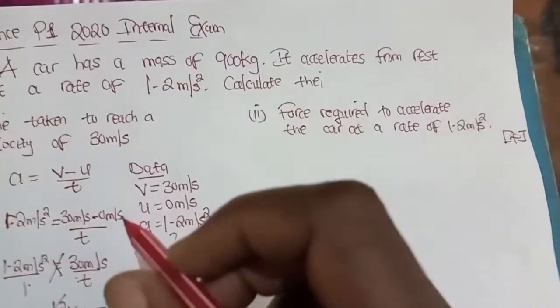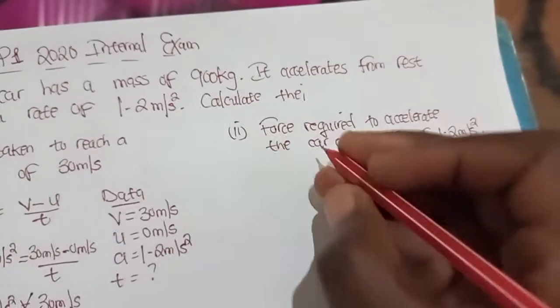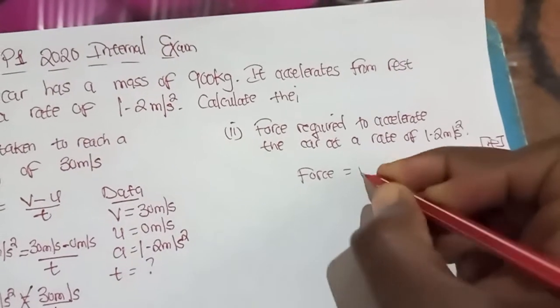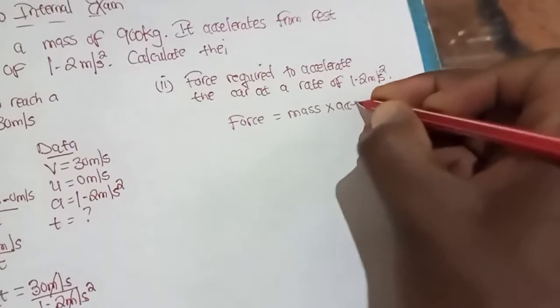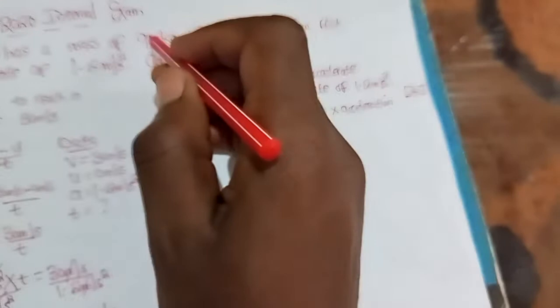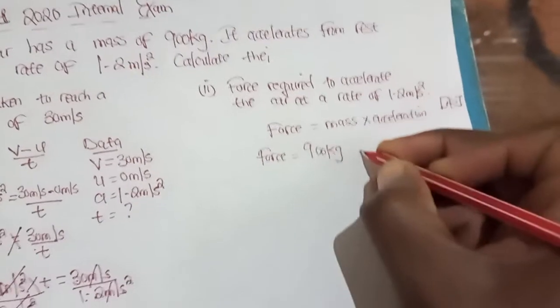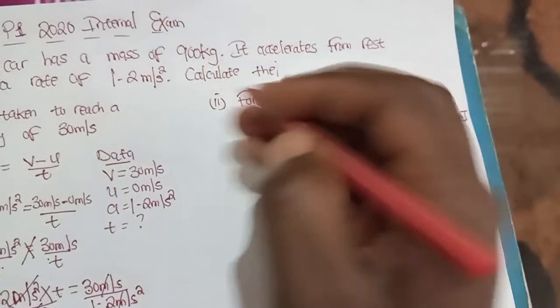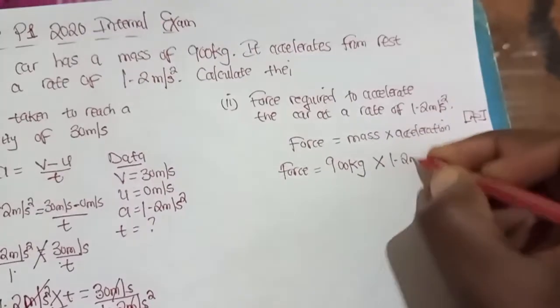When we talk about force, it is a pull or push exerted on an object. We're going to say force equals mass times acceleration — not gravity, but acceleration. So force equals mass, and the mass was 900 kg, multiplied by the acceleration, which is 1.2 m per second squared.